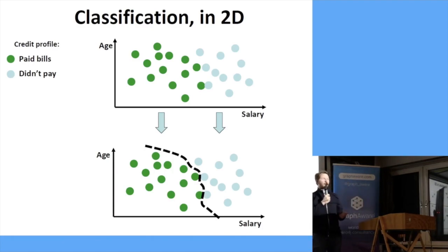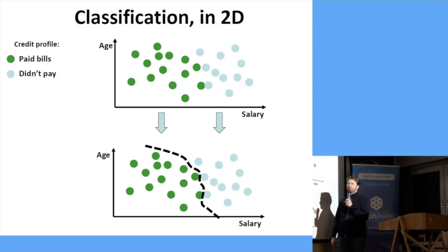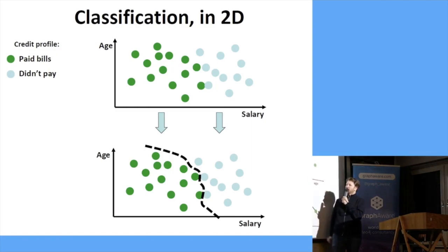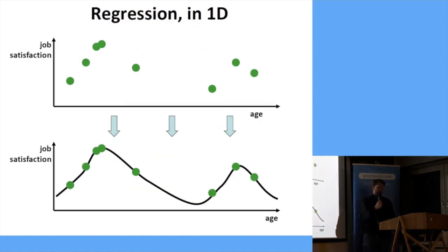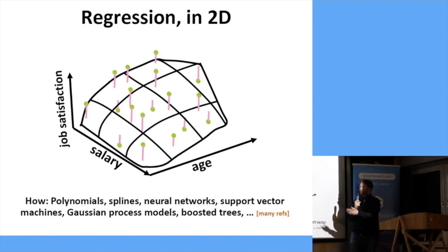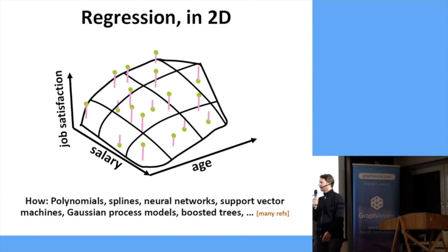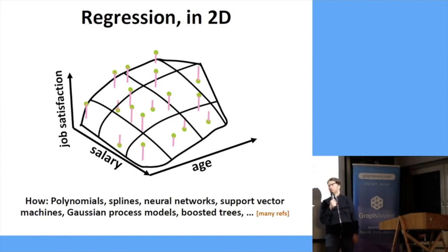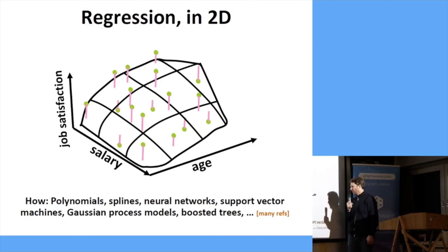Regression is another use case for AI. Rather than having a binary output, you've got one input dimension - say, age - and the output is job satisfaction. You have a few samples and you simply fit a curve to this; that's a continuous value curve, that's regression. This isn't just AI, of course - it covers linear models, polynomials, splines, neural networks. With two inputs and one output, like salary and age predicting job satisfaction, you get a surface. There are many techniques built over the last 50-70 years. Gaussian process models are really great for up to 20 dimensions. Boosted trees, all these sorts of things.